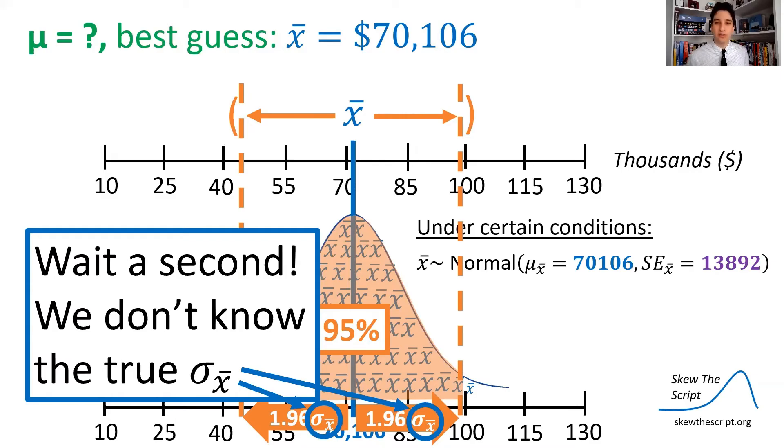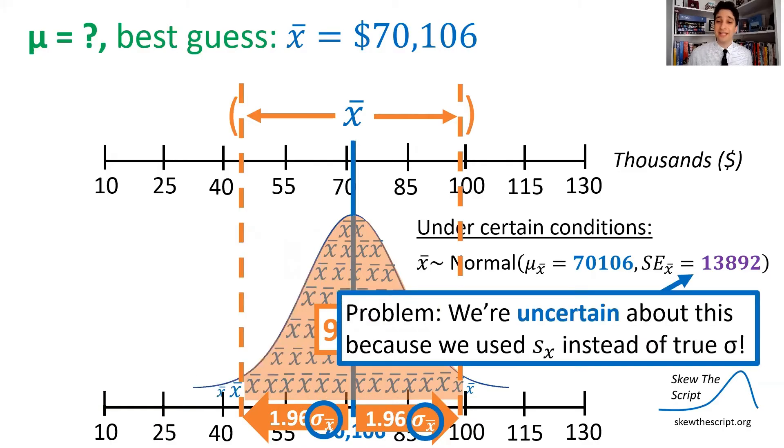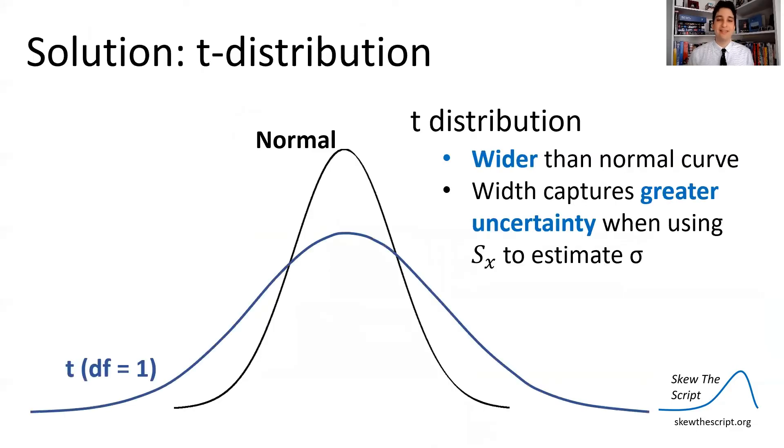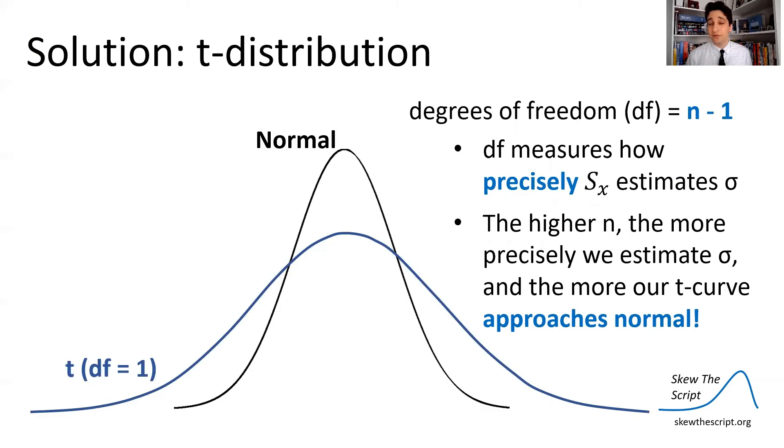But wait a second, we don't know the true standard deviation of our sample means. That's because we plugged in the sample standard deviation in for sigma rather than the true standard deviation. We're uncertain about this because we use the sample standard deviation instead of the population one. We don't know the population one. So how do we account for this extra uncertainty? Well, the solution is to use something called the T distribution. Here's a normal curve, like we've always been looking at. This is a T curve with one degree of freedom. What does that mean? Well, the T distribution is wider than a normal curve. It's also symmetric. And we use it when we want to capture the greater uncertainty of using the sample standard deviation to estimate the true standard deviation in our standard errors. So in the degrees of freedom that you see there is, in this case, going to be the sample size minus one. Degrees of freedom is something that you use to measure how precisely your sample standard deviation is estimating the true standard deviation. And as with most estimates, the higher your sample size, the more closely you're going to estimate the true standard deviation, and you're going to approach a normal curve.